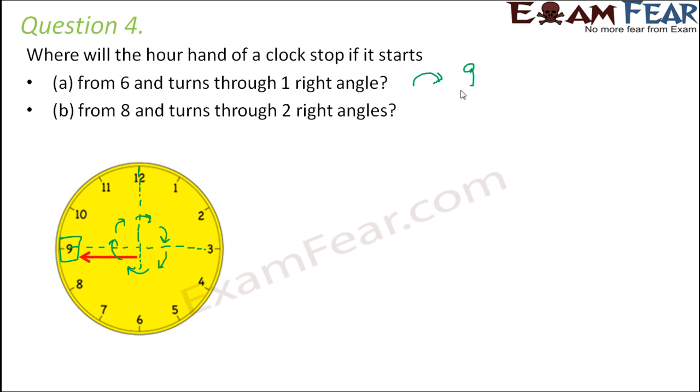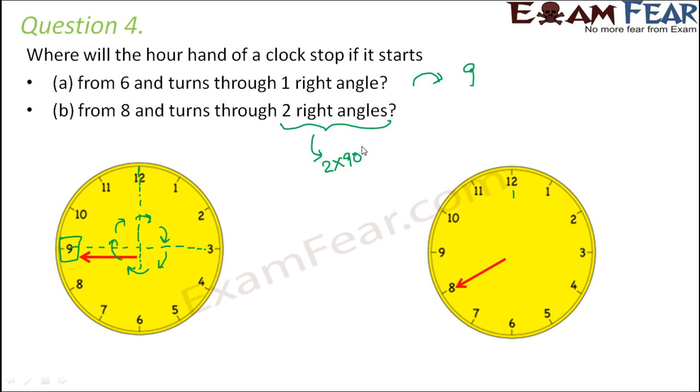Now if it starts from 8 and turns through two right angles, let's see what would happen in that case. So it started from 8 and it completed how many right angles? Two right angles. So two right angles is how much? One right angle is 90 degrees, so two right angles is 2 × 90 degrees, that is equal to 180 degrees. So what is 180 degrees? This is a straight angle.